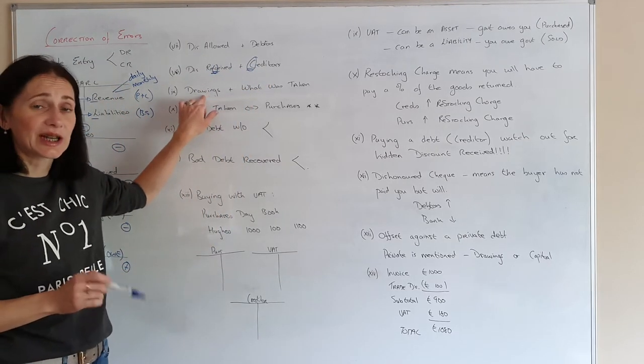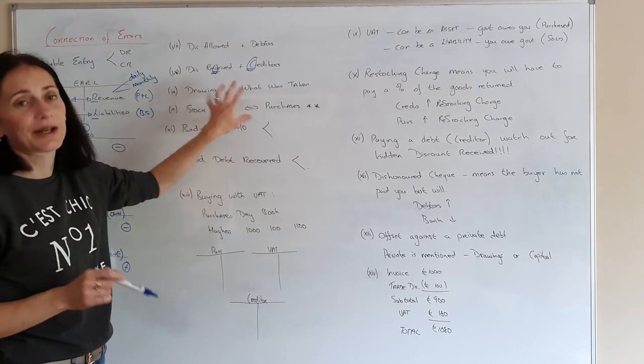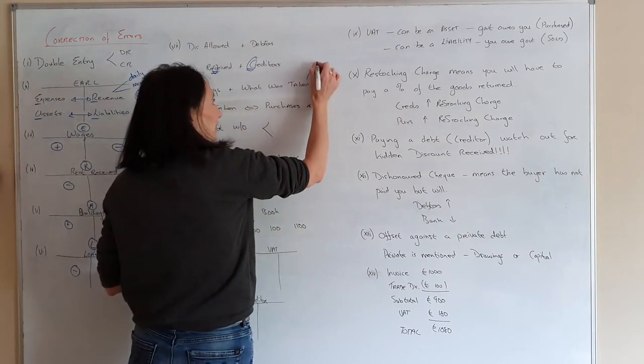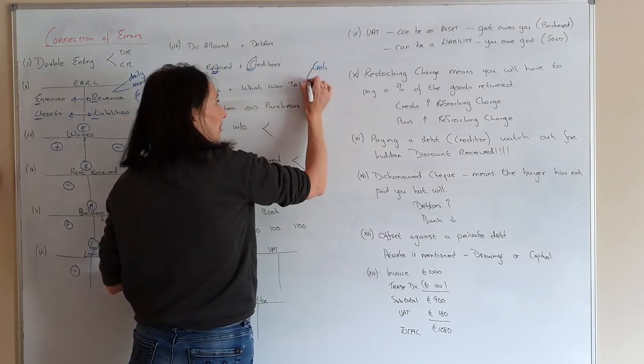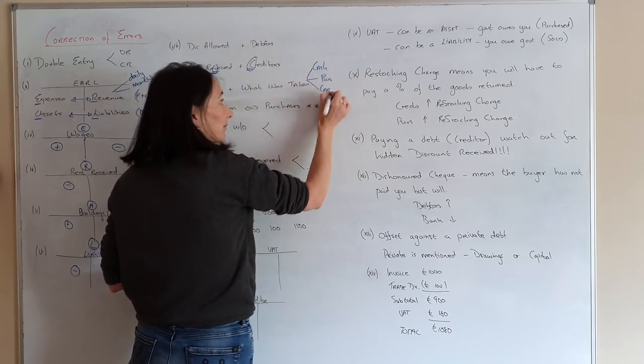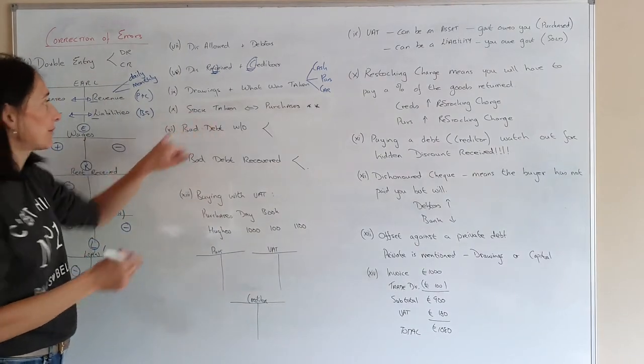Drawings is when the owner takes something from the business. So you have a drawings account and whatever they took from the business. Examples of what an owner might take. They might take cash. They might take goods, which would be purchases. They might take a car. Whatever they take is the second account there.